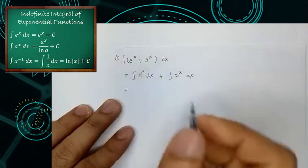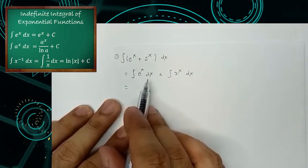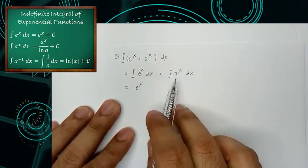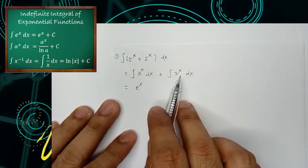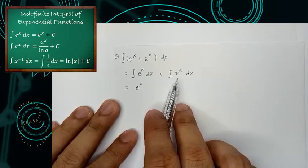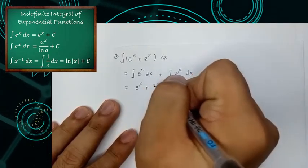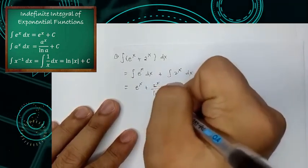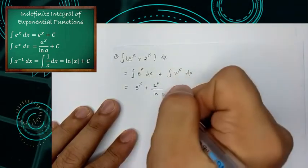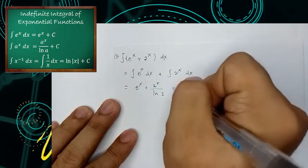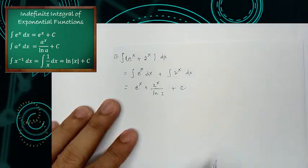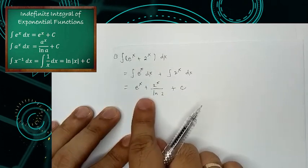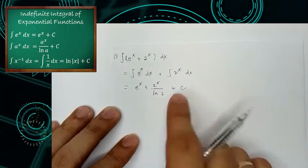As we simplify it further, we all know that the integral of e raised to x dx has a value of simply itself — e raised to x. And then for the second term, the integral of 2 raised to x dx, we simply copy our given: 2 raised to x. Then from our rule, we divide by the ln of the base, which is 2. So the final answer is e raised to x plus 2 raised to x all over ln(2) plus C.